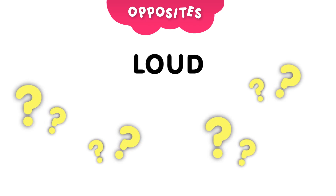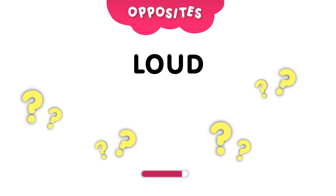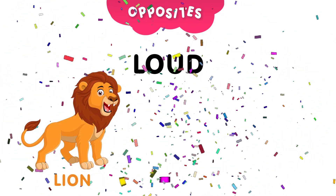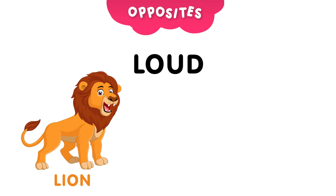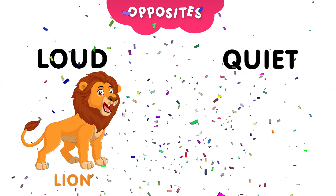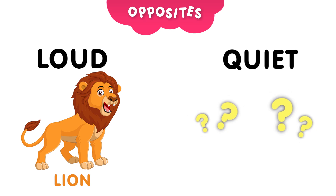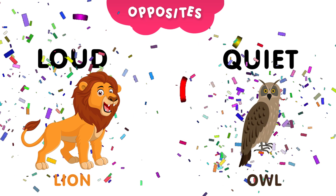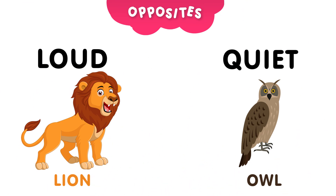Next up, let's learn the word loud. Can you guess which animal is loud? The loud animal is the lion. What's the opposite of loud? Can you guess? Take 5 seconds to think about it. The opposite of loud is quiet. Can you guess which animal is quiet? And the answer is, the owl. Owls are quiet.